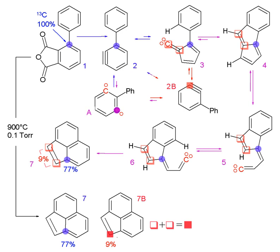Nuclear magnetic resonance and mass spectrometry are used to investigate the mechanisms of chemical reactions. NMR and MS detect isotopic differences, which allows information about the position of the labeled atoms in the product's structure to be determined. With this information, the reaction pathway the initial metabolites utilize to convert into the products can be determined.